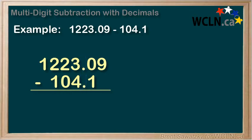Everything is lined up, so we're ready to start. Starting in the right-hand column, in the hundredths column, we have 9 minus nothing. So we just put 9 in our answer. Now that was easy.